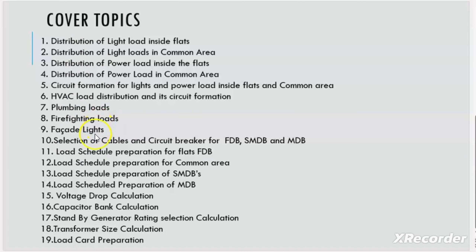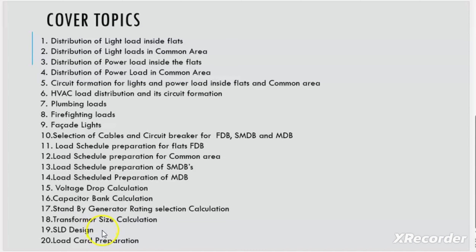After considering all the loads, we will make the selection of cable and circuit breaker for final distribution board, sub main distribution board, and main distribution board. We will prepare the load schedule for the flats DB, then for the common area final distribution board. We will again make the load schedule for the SMDBs and MDBs. We will calculate the voltage drop, design the capacitor bank, calculate the KVA rating for the generator, calculate the transformer size, do the SLT designing, and finally prepare the load card for this building.